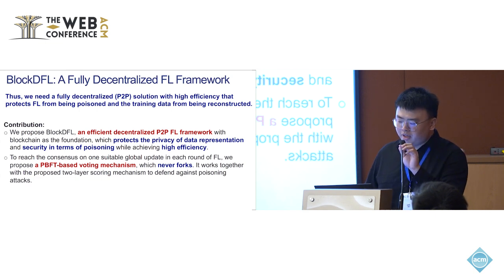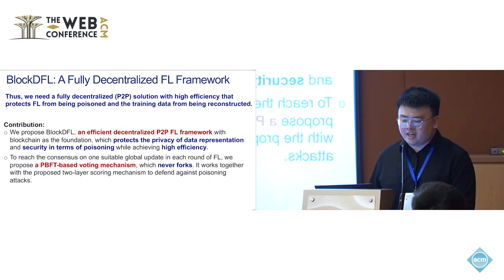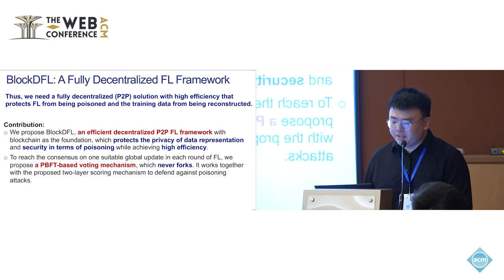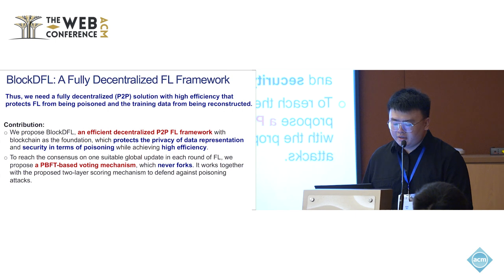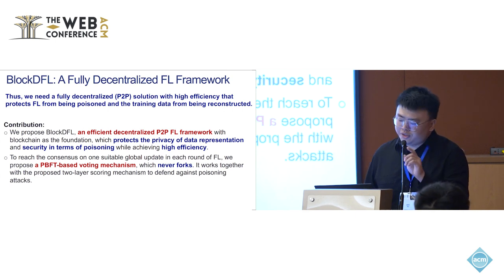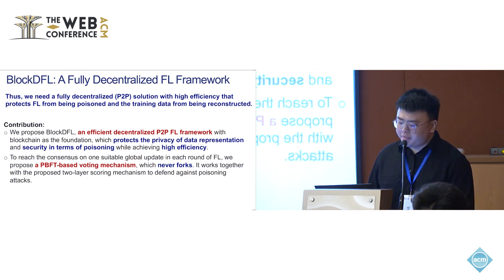That's why we propose BlockDFL — we need a fully decentralized solution with high efficiency that protects FL from being poisoned and the training data from being reconstructed. We propose BlockDFL, an efficient decentralized P2PFL framework with blockchain as the foundation. It protects the privacy of data representation and security against poisoning attacks while achieving high efficiency. To reach consensus on the suitable global update in each round of FL, we propose a PVFT-based voting mechanism, which never forks.